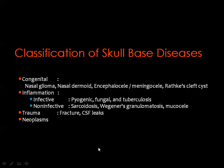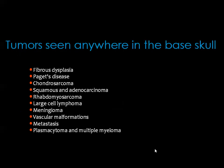We classify skull base diseases into congenital, inflammatory, traumatic, and neoplastic. Congenital lesions include nasal glioma, nasal dermoid, encephalocele, meningocele, and Rathke's cleft cyst. Inflammatory lesions include pyogenic, fungal, and tuberculous infection; non-infective causes like sarcoidosis and Wegener's granulomatosis; as well as mucocele. Traumatic causes include fractures and CSF leaks. These tumors and lesions can occur anywhere in the skull base — anterior, middle, or posterior.